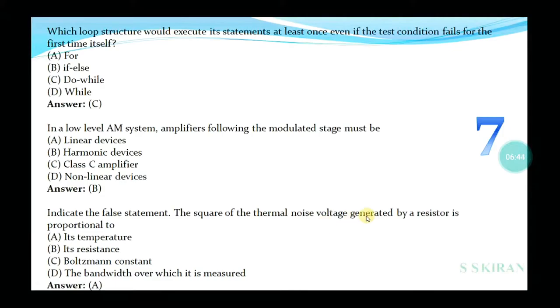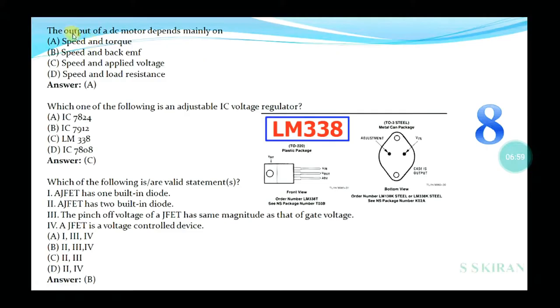Indicate the false statement. The square of the thermal noise voltage generated by a resistor is proportional to its temperature, its resistance, Boltzmann constant, or the bandwidth over which it is measured? Yes, option is A, its temperature. See the next page.